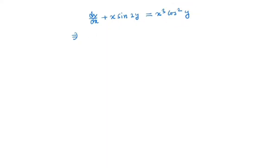So we have 1/cos² y times dy/dx plus x sin 2y/cos² y is equal to x³.